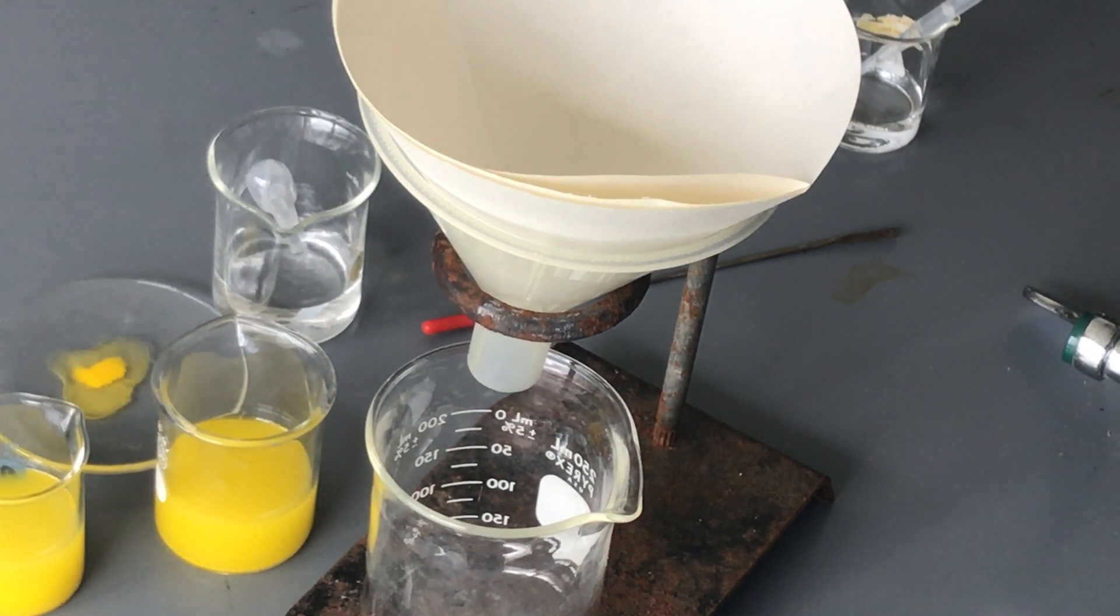We've got a ring stand, got a beaker below, and I got filter paper. In the yellow we have the material that we made in a previous demonstration, which is the lead compound or lead iodide that was made in the double replacement.